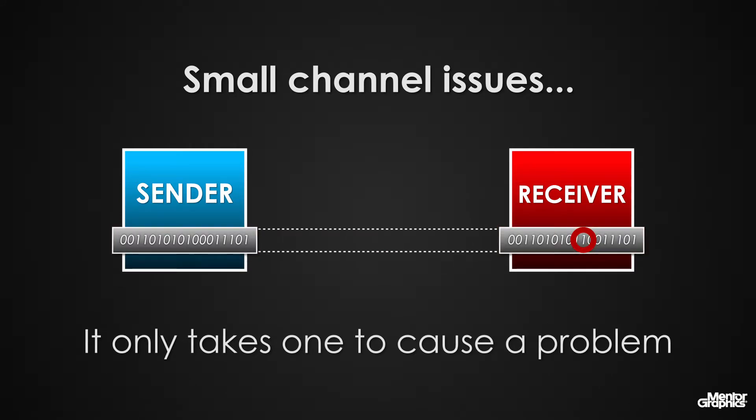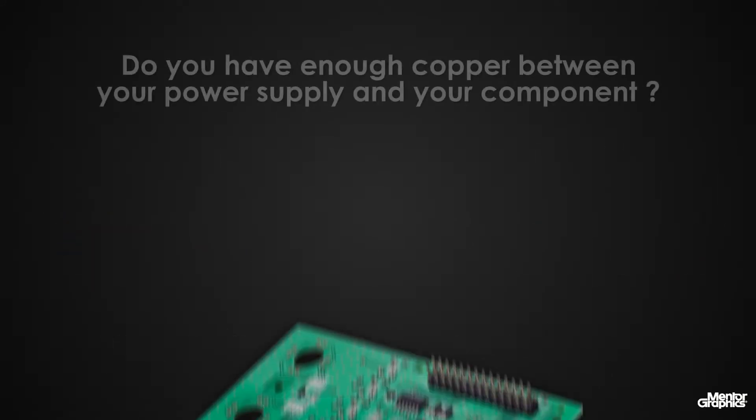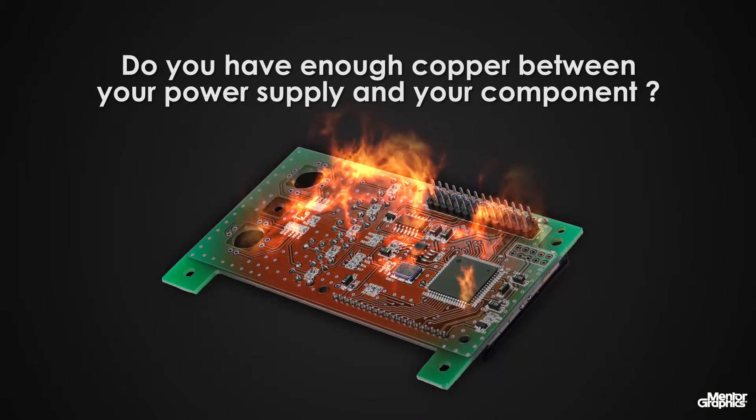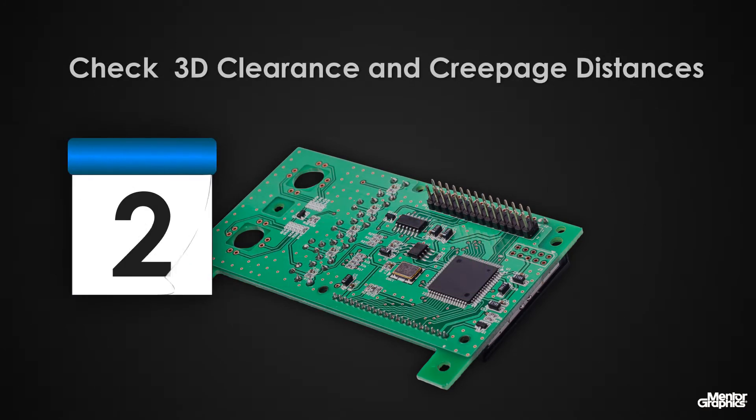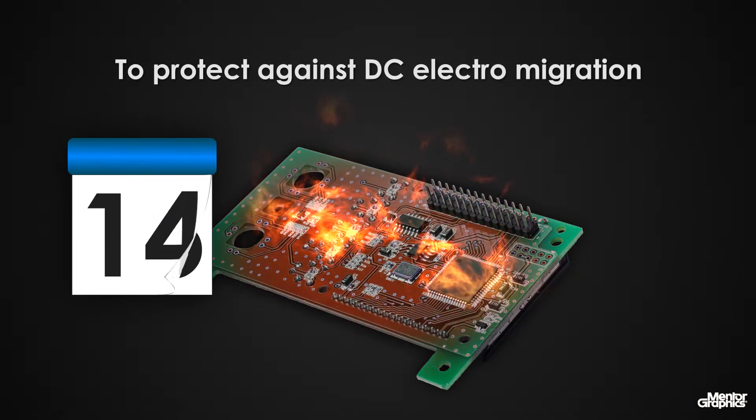Some problems may not be immediately apparent. Insufficient copper between your power supply and your component can be a ticking time bomb, and it's important to be able to check 3D clearance and creepage distances to protect against DC electro migration over time.